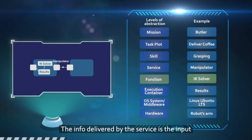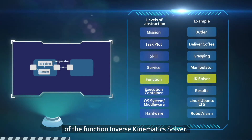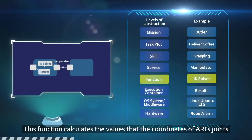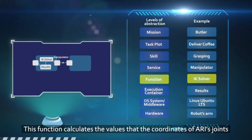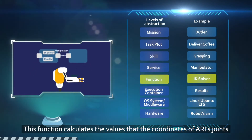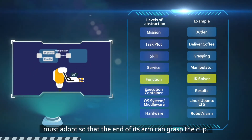The info delivered by the service is the input of the function inverse kinematics solver. This function calculates the values that the coordinates of Ari's joints must adopt, so that the end of its arm can grasp the cup.